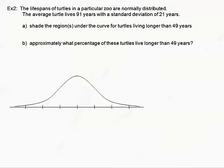Let's look at example two. The lifespans of turtles in a particular zoo are normally distributed — again, normally distributed is important to note so we can use the empirical rule. The average turtle lives 91 years with a standard deviation of 21 years. Part A asks us to shade the region or regions under the curve for turtles living longer than 49 years. We need to figure out where 49 years falls in our picture.